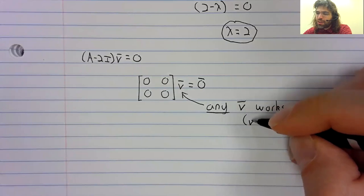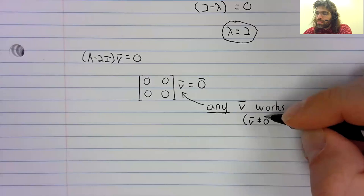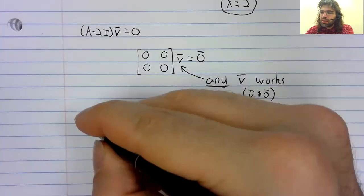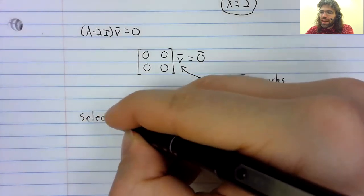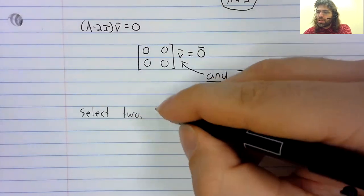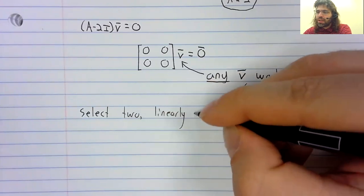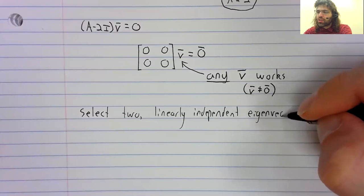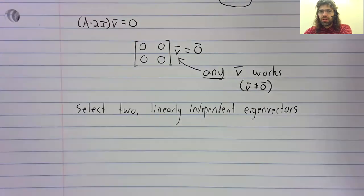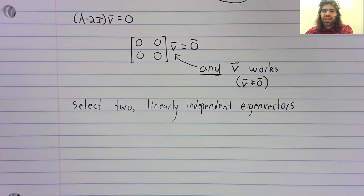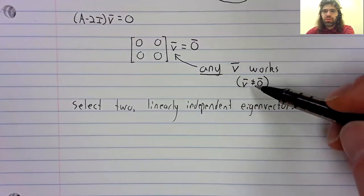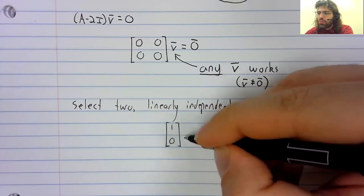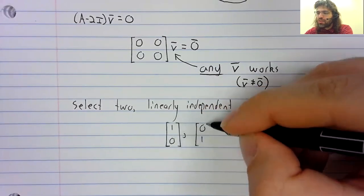With the one minor exception that zero is never an eigenvector. So let's select two linearly independent eigenvectors. There are an infinite number of choices because every vector except for zero is an eigenvector. Maybe we select [1,0] and [0,1].